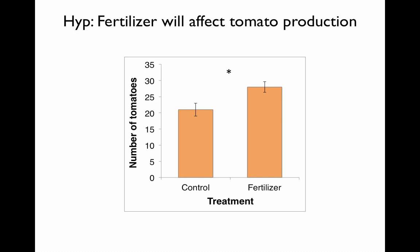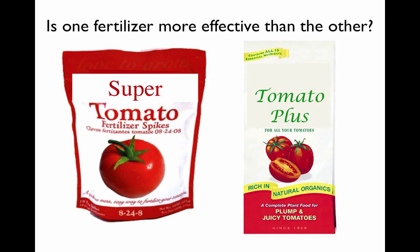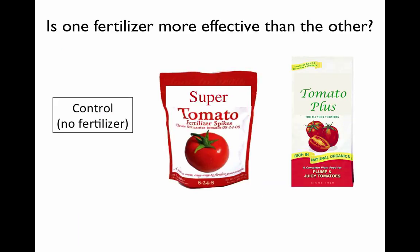Imagine that instead of just being interested in the effect of fertilizer on tomato production, we're interested in testing two different brands of fertilizer to see if one is more effective than the other. The two brands are Super Tomato Fertilizer and Tomato Plus Fertilizer. In an experiment designed to answer this question, we would have two different fertilizer treatments — Super Tomato and Tomato Plus — and a control group that does not get fertilized, because we still want to know whether either fertilizer works better than doing nothing at all.